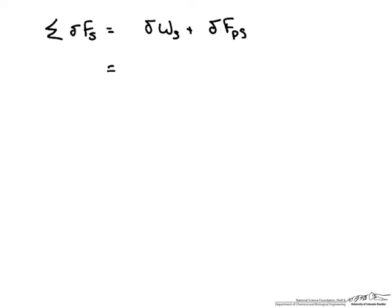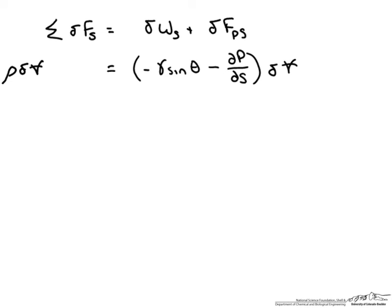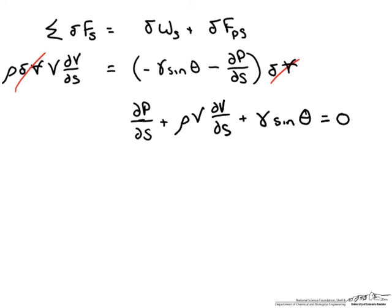The sum of forces looks like the following. Taking out the differential volume and plugging in what we know for the other half of this equation, we have density times the differential volume times the velocity and the differential velocity with respect to s. This allows us to cancel out both terms of the differential volume and rewrite the equation.